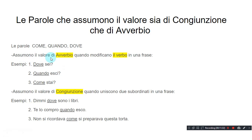Assumono il valore di avverbio quando modificano il verbo in una frase — these become adverbs when they modify the verb in a sentence. Esempi: Dove sei? — Where are you? Quando esci? — When do you get out? Come stai? — How are you?